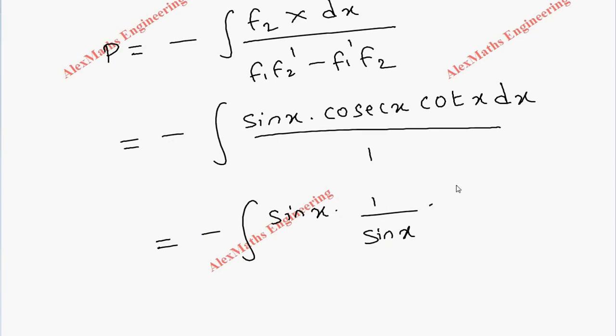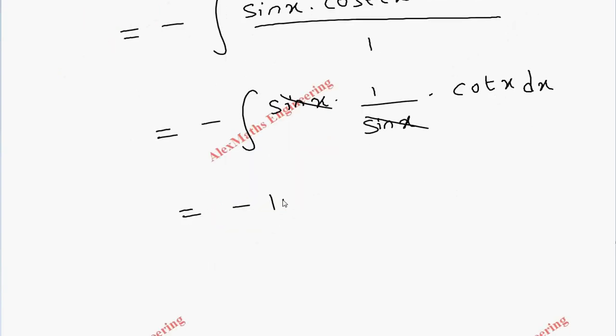Cot x can be written as cos x/sin x, but we'll keep it as cot x so we can apply the formula directly. After canceling, we're left with only cot x. The integration of cot x is log(sin x).